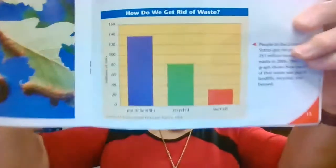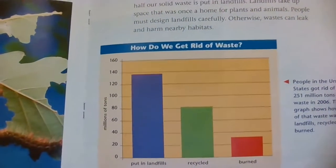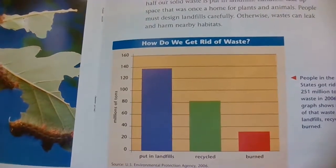How much of our solid waste do we recycle? According to the chart, 80 million tons is what we recycle. And how much do we put into landfills? 140 million tons is put into landfills. That's a lot of trash that we're putting into landfills.